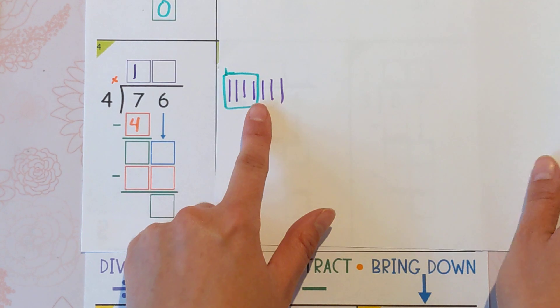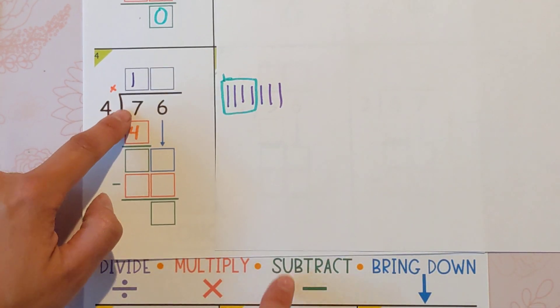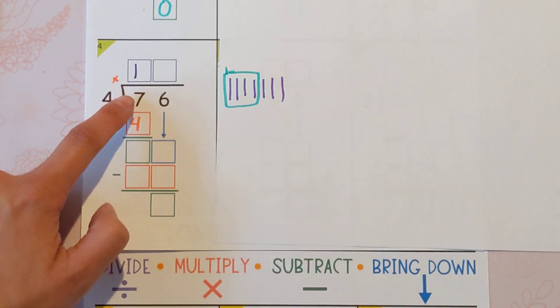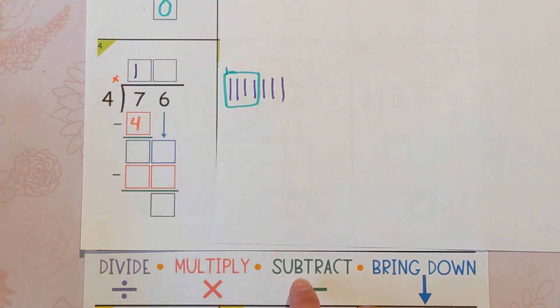Now we're going to subtract to get those leftovers. So the last thing we touched was this four. We're going to do seven minus four, which is three.